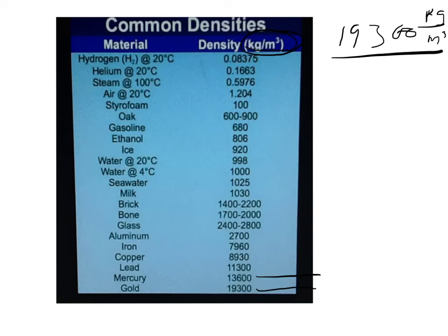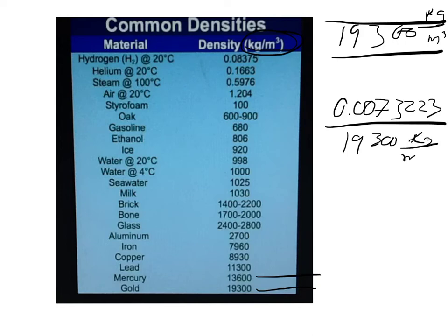And so we can put kg per meters cubed right here, and we can divide that by the mass, and actually I got that backwards, the mass is divided by the density. So the mass we said was 0.0073223, and we can divide that by the density of 19,300 kilograms per meters cubed, and our mass units in kilograms, so the kilograms are going to cancel out, and we're going to be left with cubic meters. When I punch that into my calculator, I get 3.7939 times 10 to the negative 7th power, and that's in cubic meters.